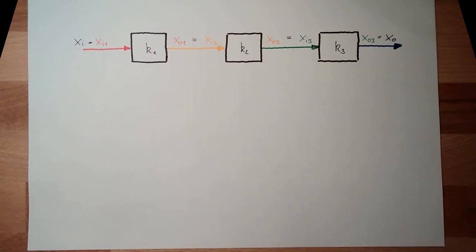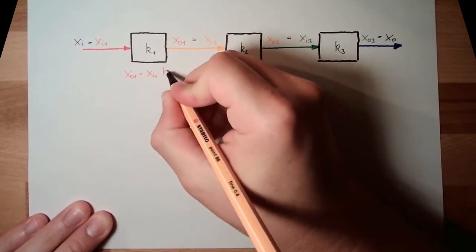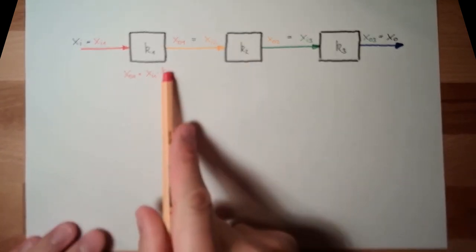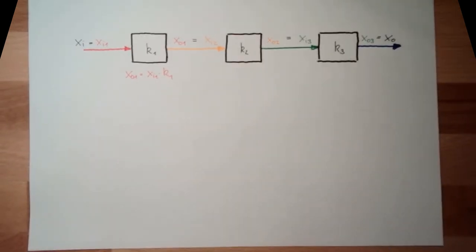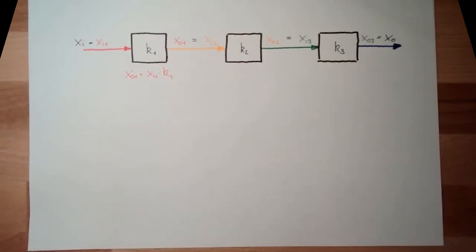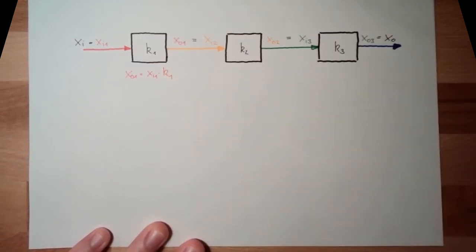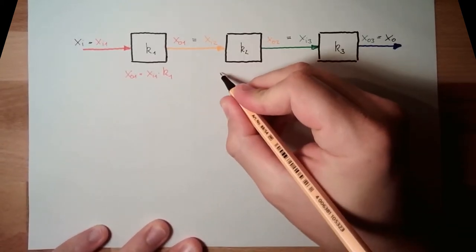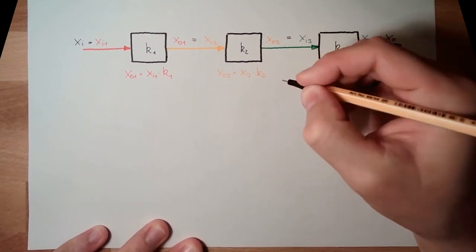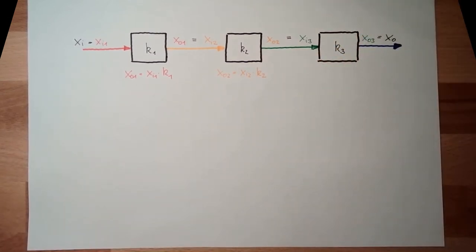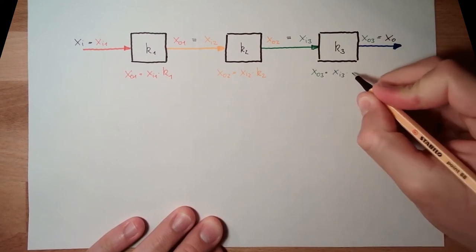So here: x01 equals xi1 multiplied by the factor k1 — that's the transfer function here. I make it simple; this is practically a line through zero, like in the video we talked about static behavior. Then x02 equals xi2 multiplied by k2, and x03 equals xi3 multiplied by k3.